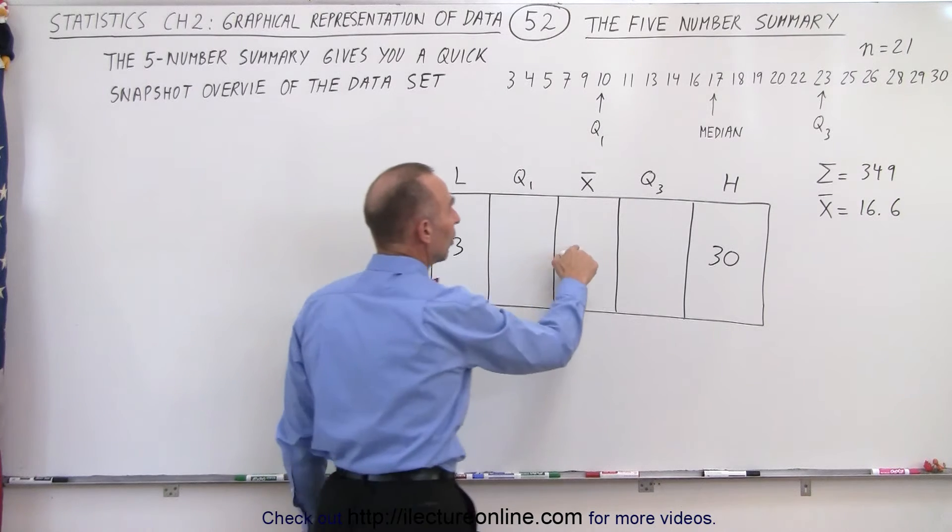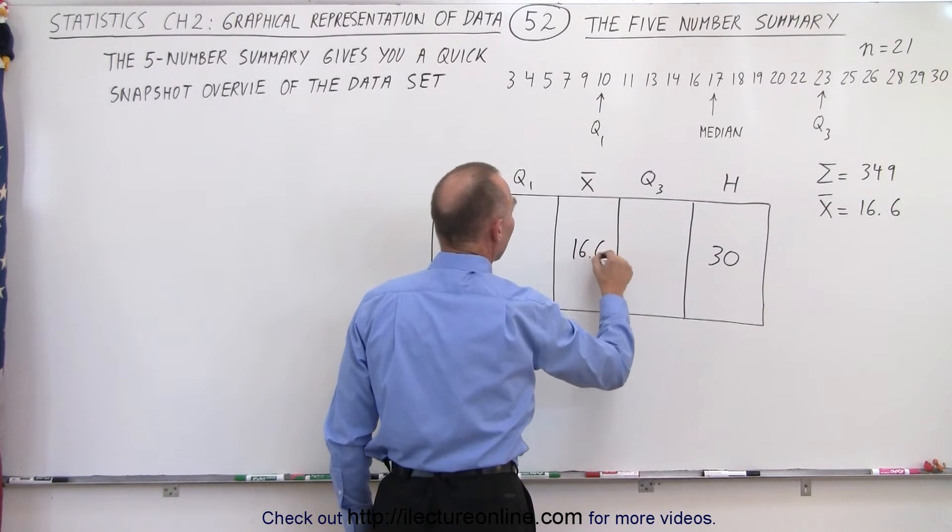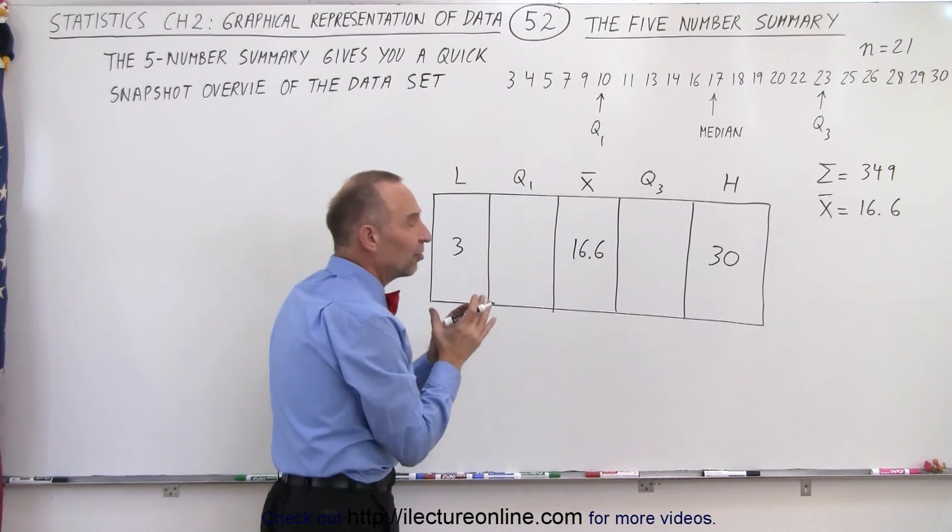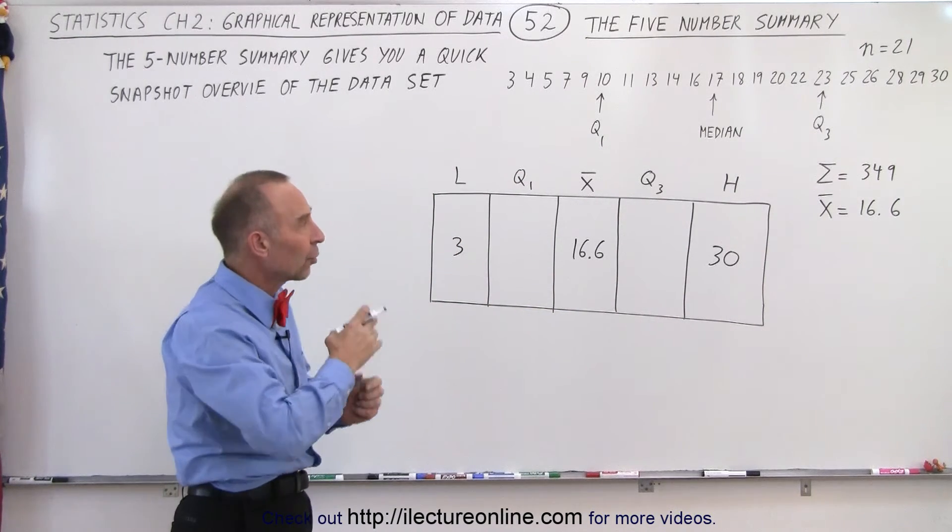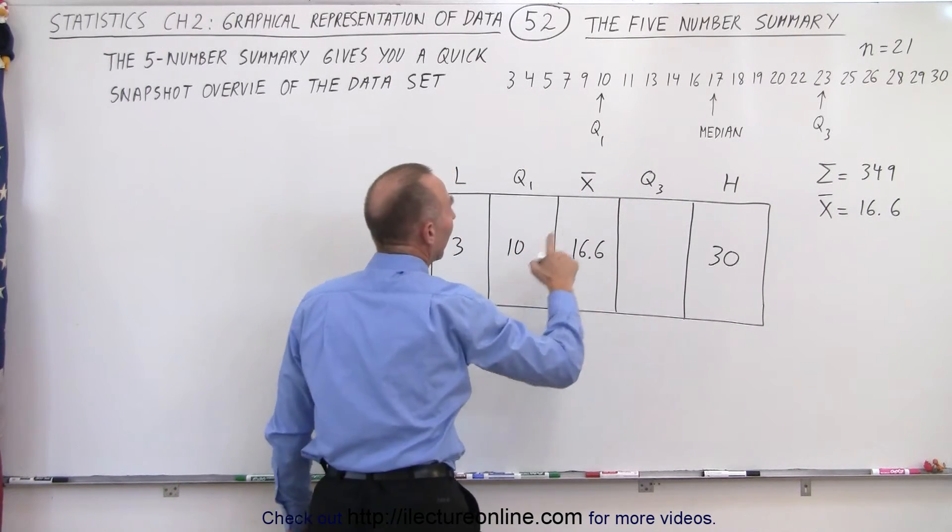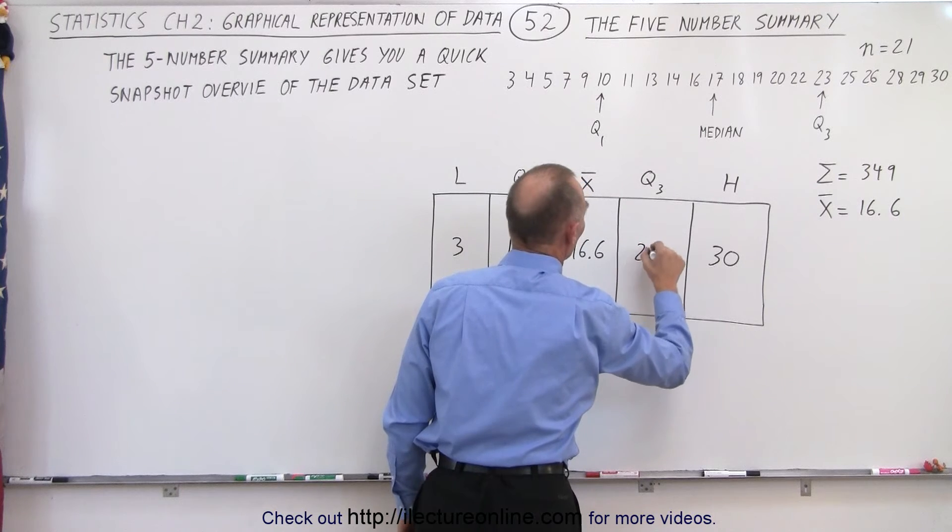Then in the middle we place the average value. So this is the average number of all the numbers in the data set. And then we want to see where the first quartile and the third quartile what that number is. In this case the first quartile is 10 and the third quartile is 23.